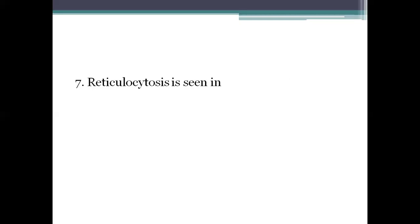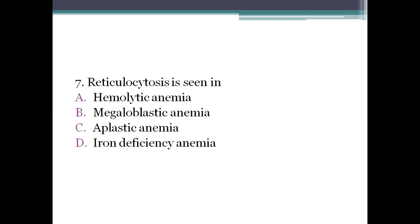Next question: reticulocytosis is seen in? Option A: hemolytic anemia. Option B: megaloblastic anemia. Option C: aplastic anemia. Option D: iron deficiency anemia. Reticulocytes are immature RBCs. Reticulocytosis refers to an increase in circulating reticulocytes. This occurs during active blood regeneration and in certain types of anemia, especially hemolytic anemia. The right answer is hemolytic anemia.